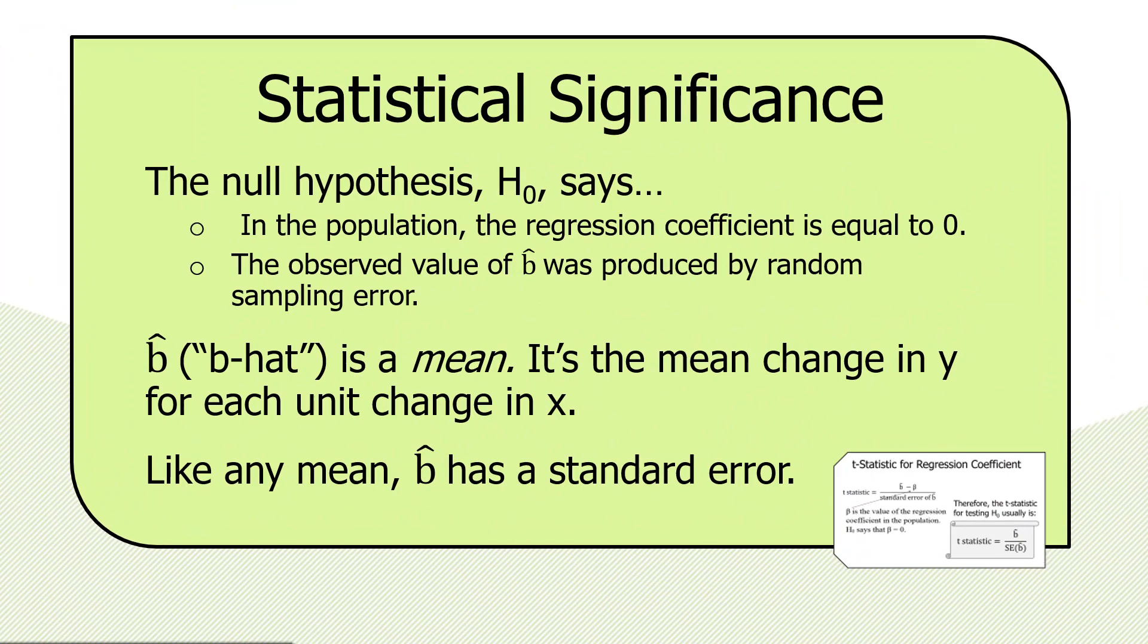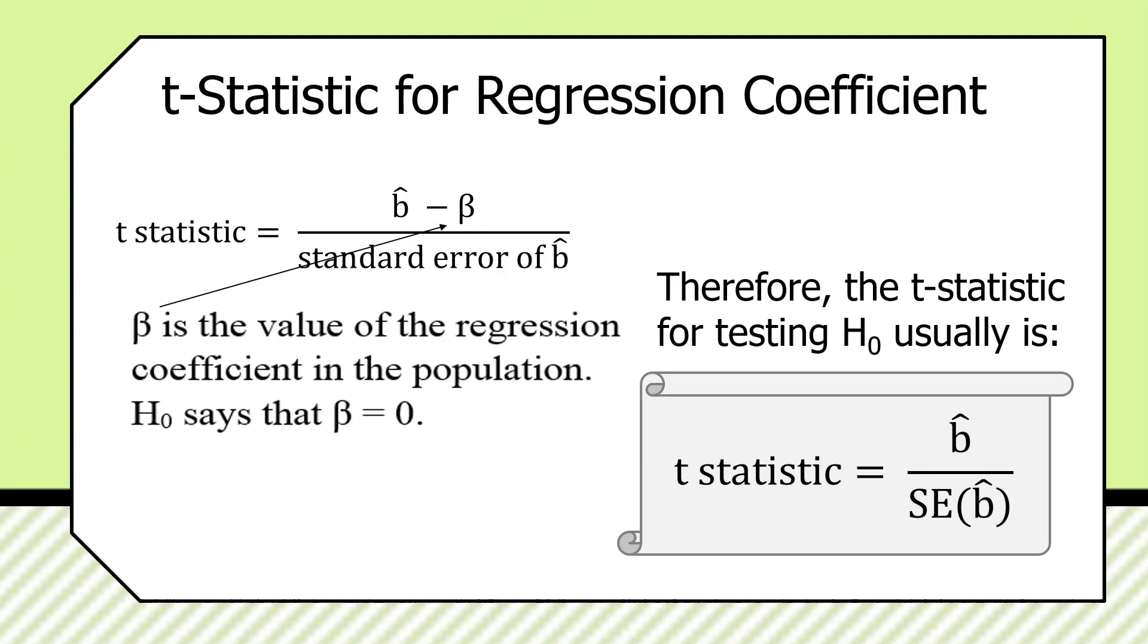So here's the formalization of how we calculate a t statistic in regression to assess statistical significance. T equals b-hat minus beta.